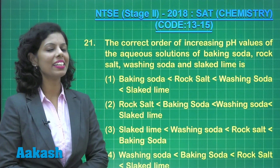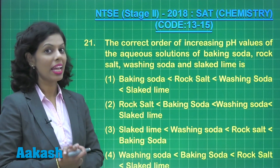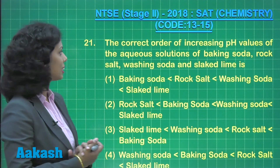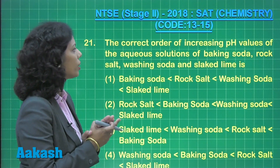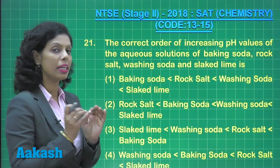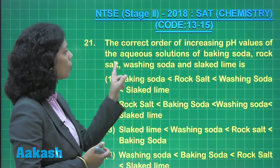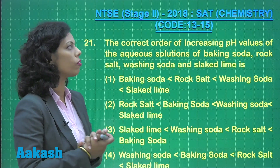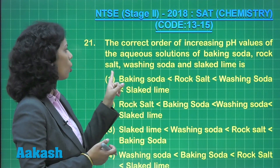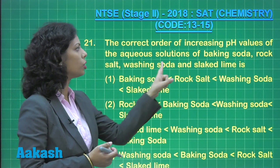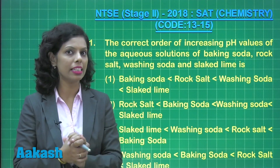Question number 21 asks for the correct order of increasing pH values of the aqueous solutions of baking soda, rock salt, washing soda, and slaked lime.